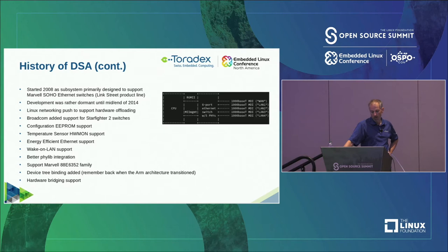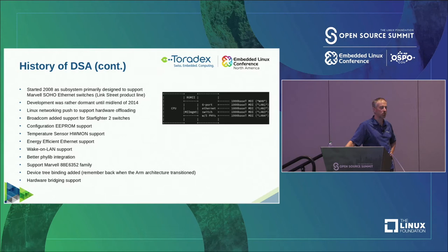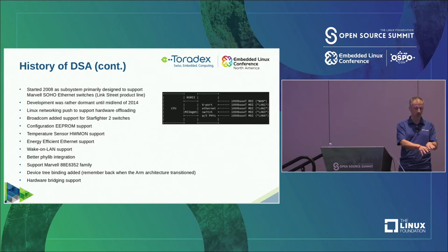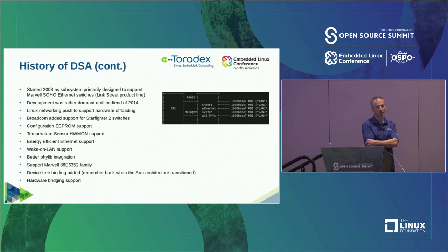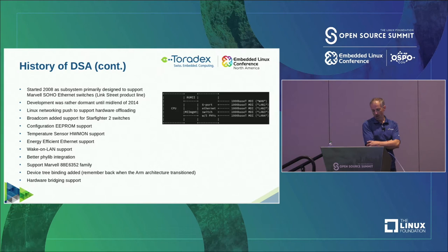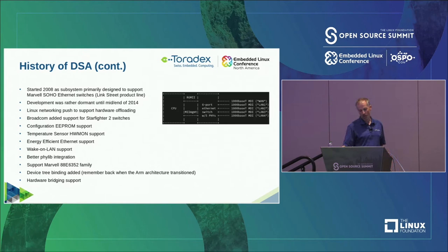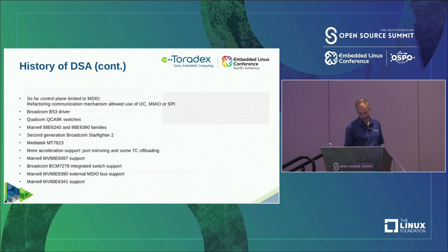There are even switch SoCs that combine ARM cores plus the switch fabric in just one chip. Support was also added for doing bridging in hardware — it doesn't make sense if you have a switch fabric but every packet needs to travel to the CPU for bridging and then travels out again. So offloading bridging was one of the first things supported.